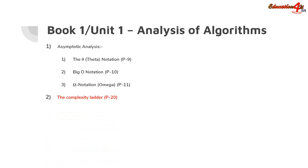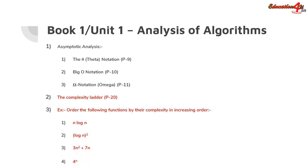The second topic is complexity ladder. You should know what the complexity ladder is and how you can ascertain the complexity. For example, a question may arise in the following fashion — you will be asked to order given functions in increasing or decreasing order. Here there are four options: n log n, log n whole square, 3n squared plus 7n, and 4 to the power of n. You should know the complexity ladder to arrange the given functions.